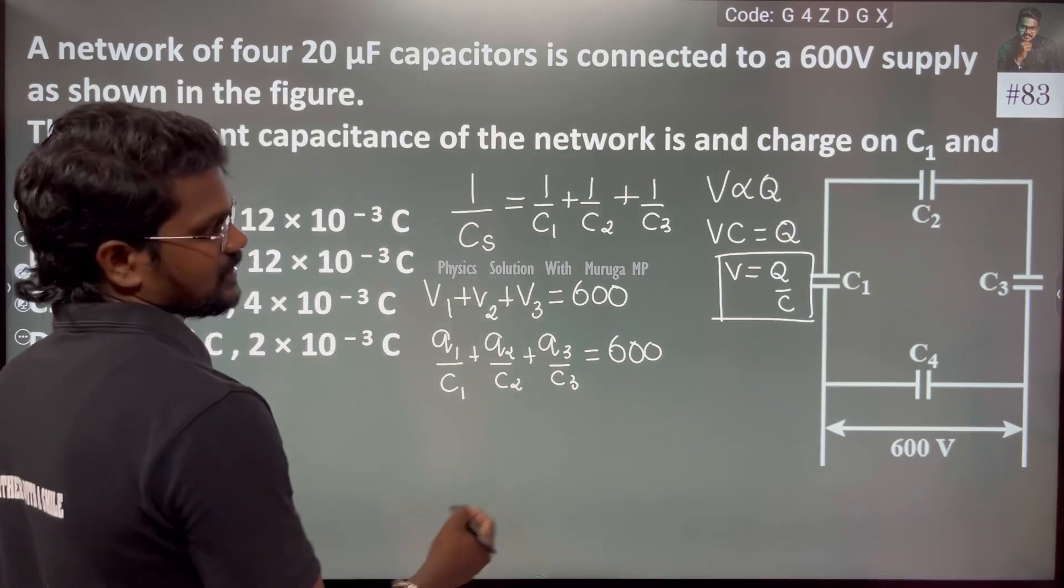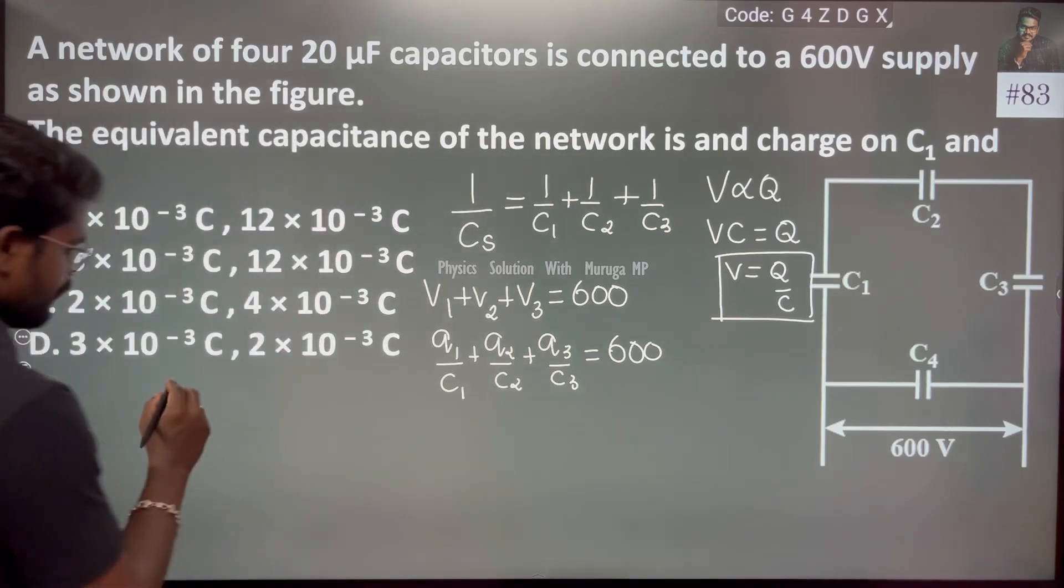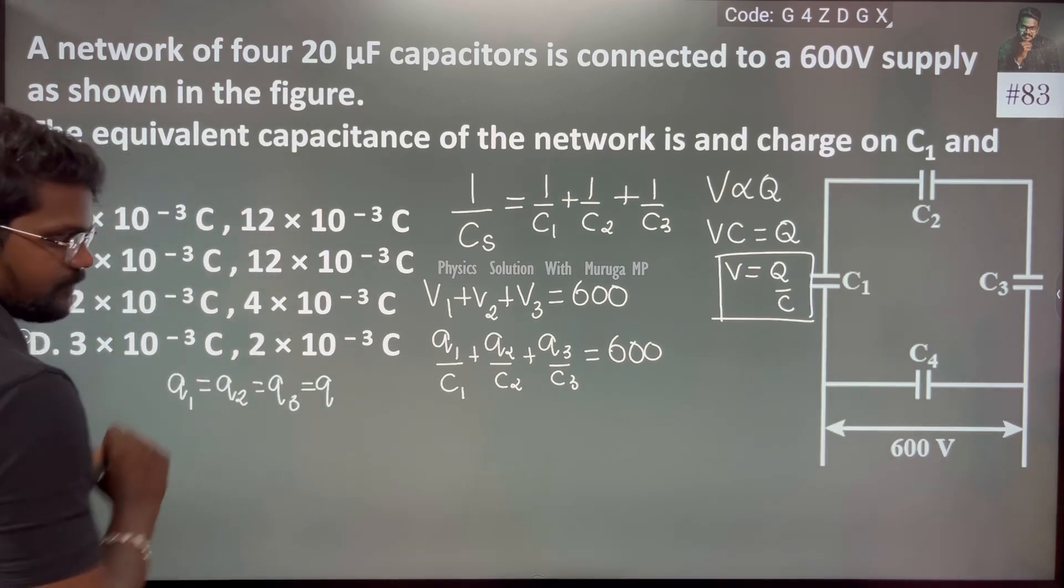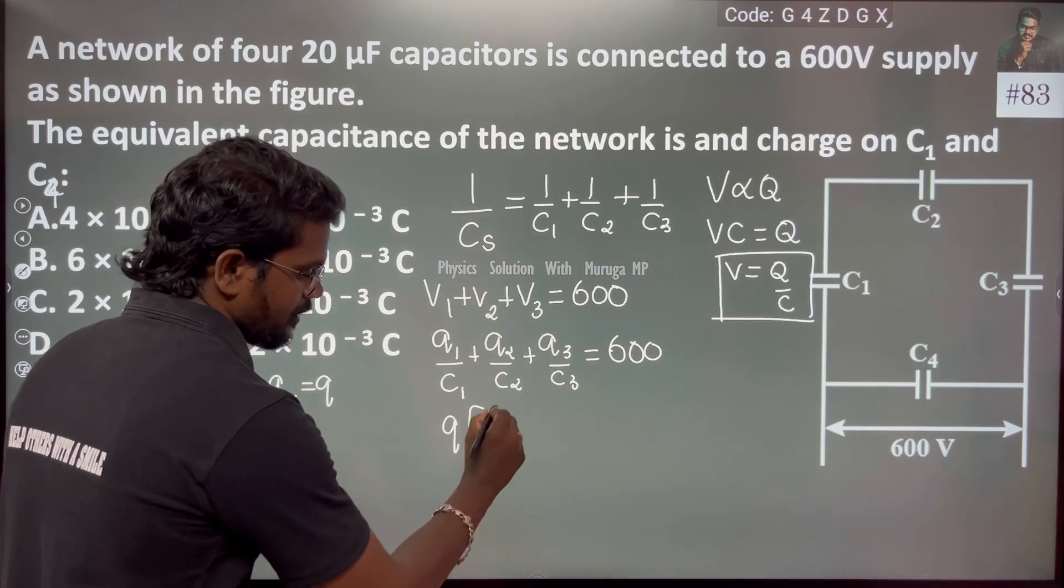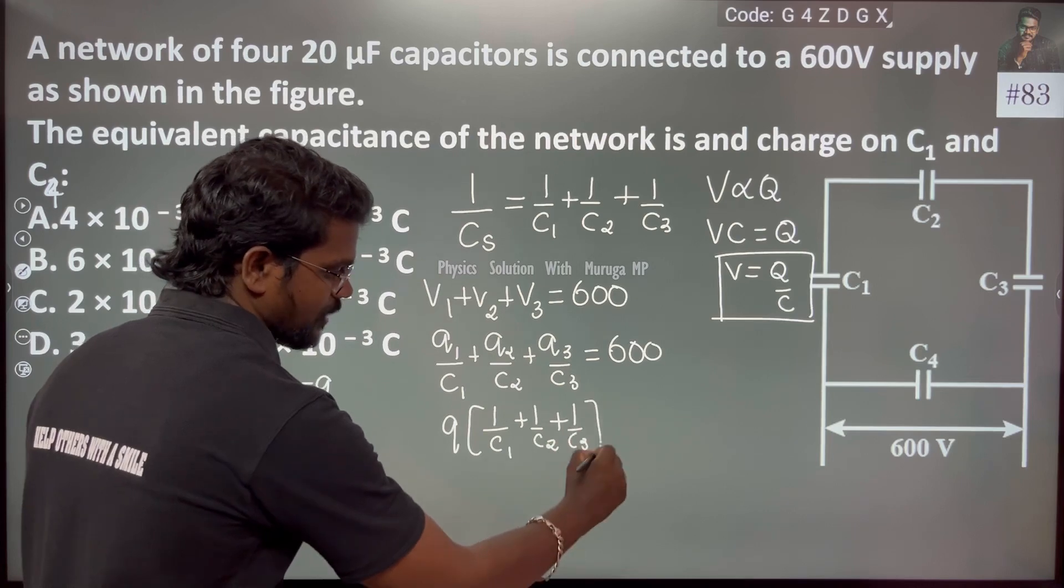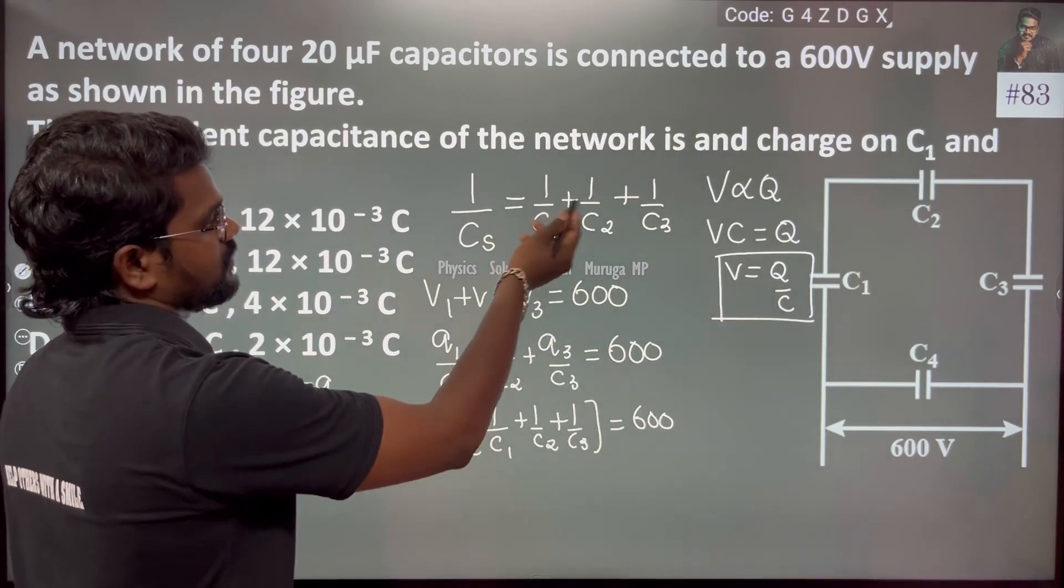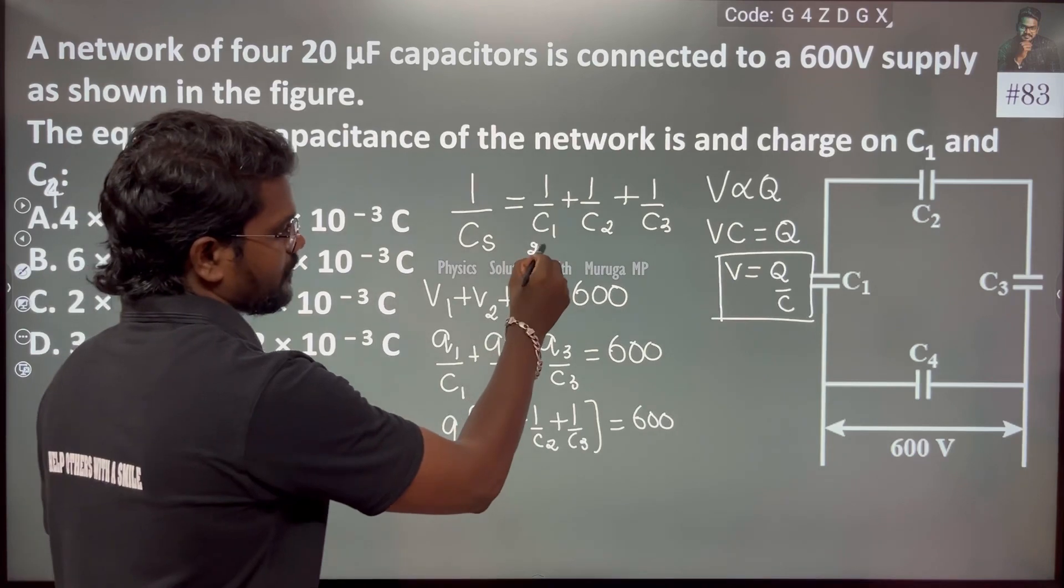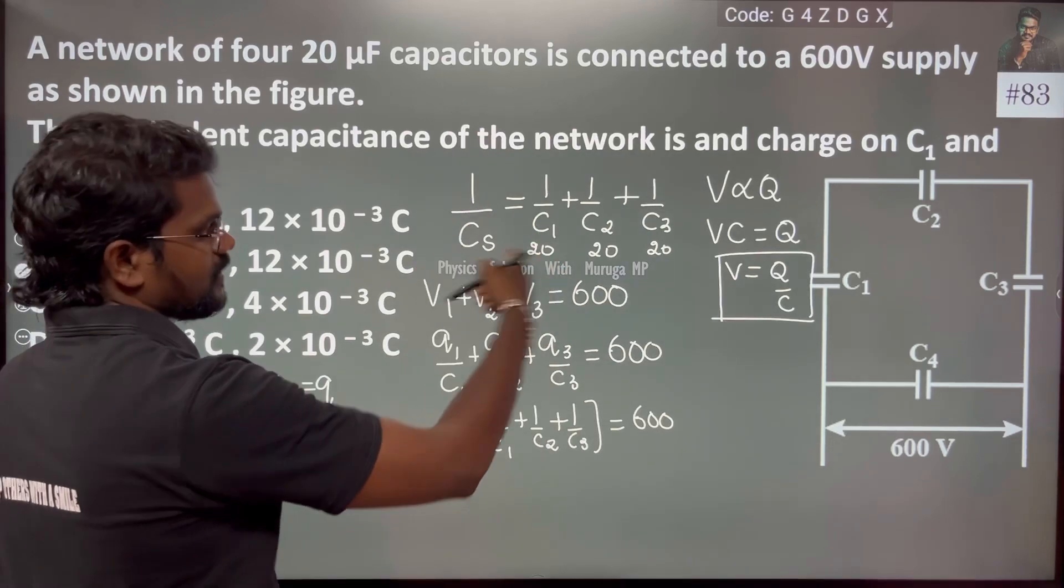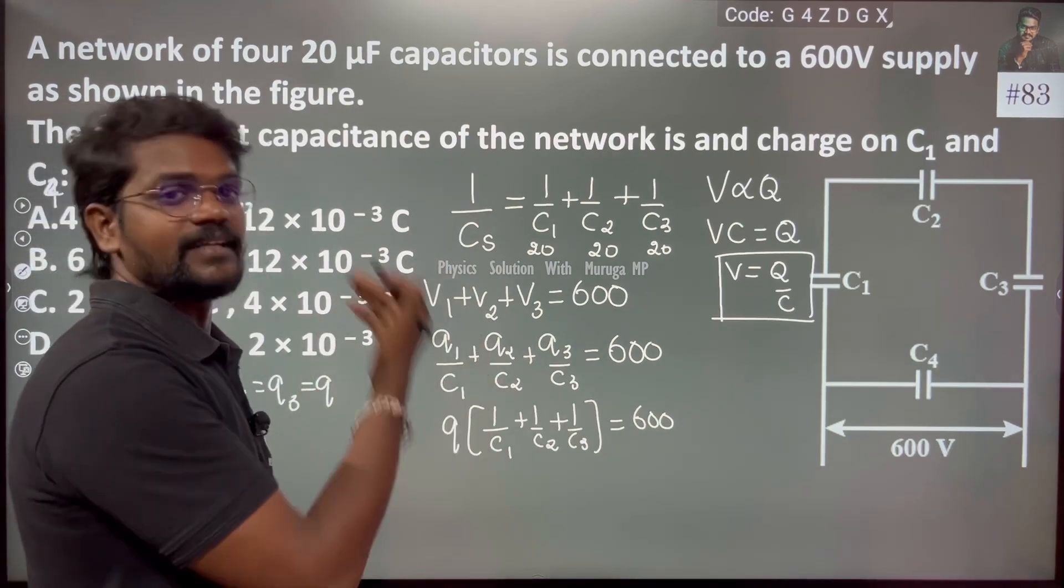Since they are in series, the charge remains the same. Therefore I can say that q1 equals q2 equals q3. So I can take q common and write: q times (1 by c1 plus 1 by c2 plus 1 by c3) which is equal to 600.